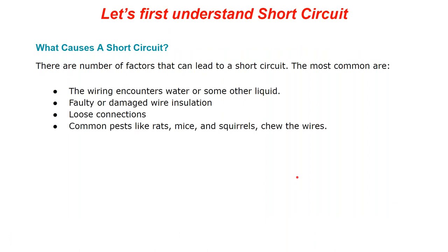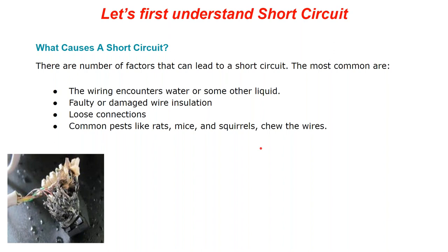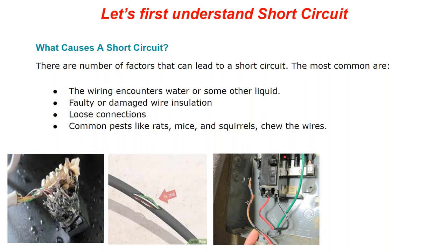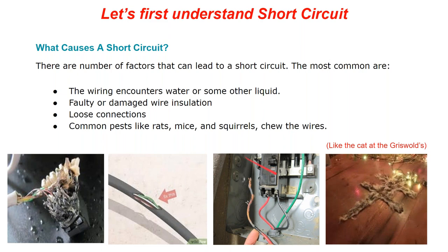What causes a short circuit? Several factors: water damage — that's why NEMA ratings matter for damp or outdoor environments. Cables that get pinched or damaged can also cause a short circuit, as can a loose connection or loose termination. And sometimes animals can get into outdoor panels and chew through wiring, causing a short circuit. We have to safeguard against all of these.